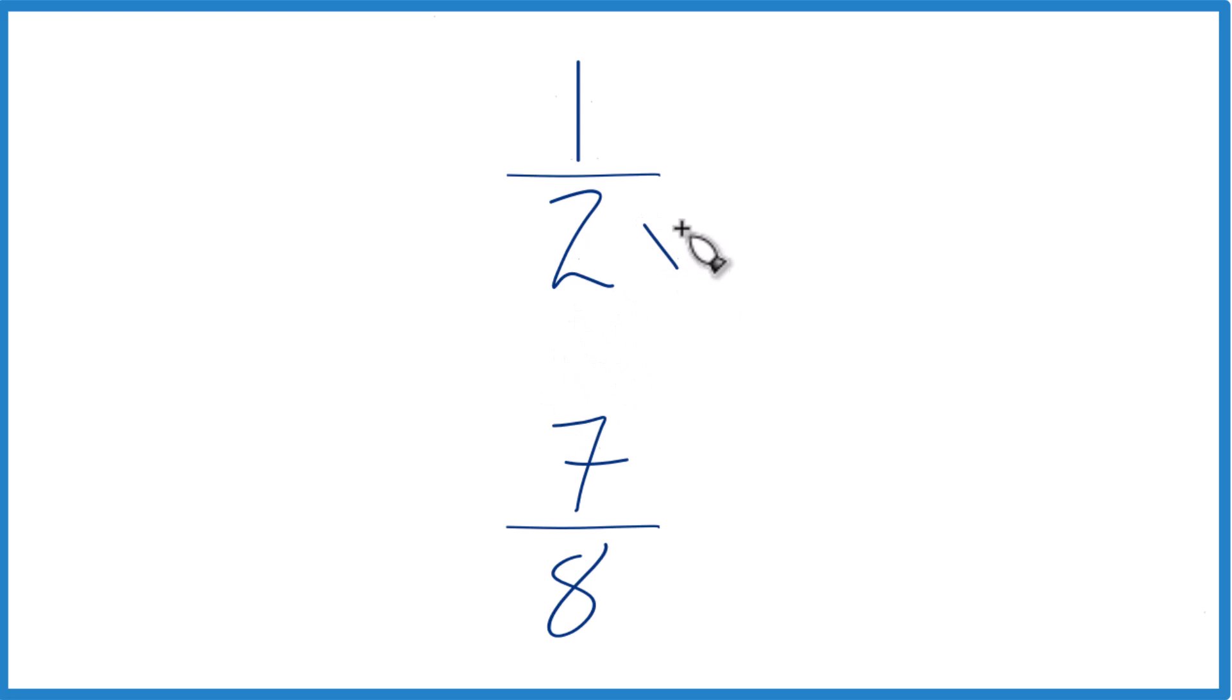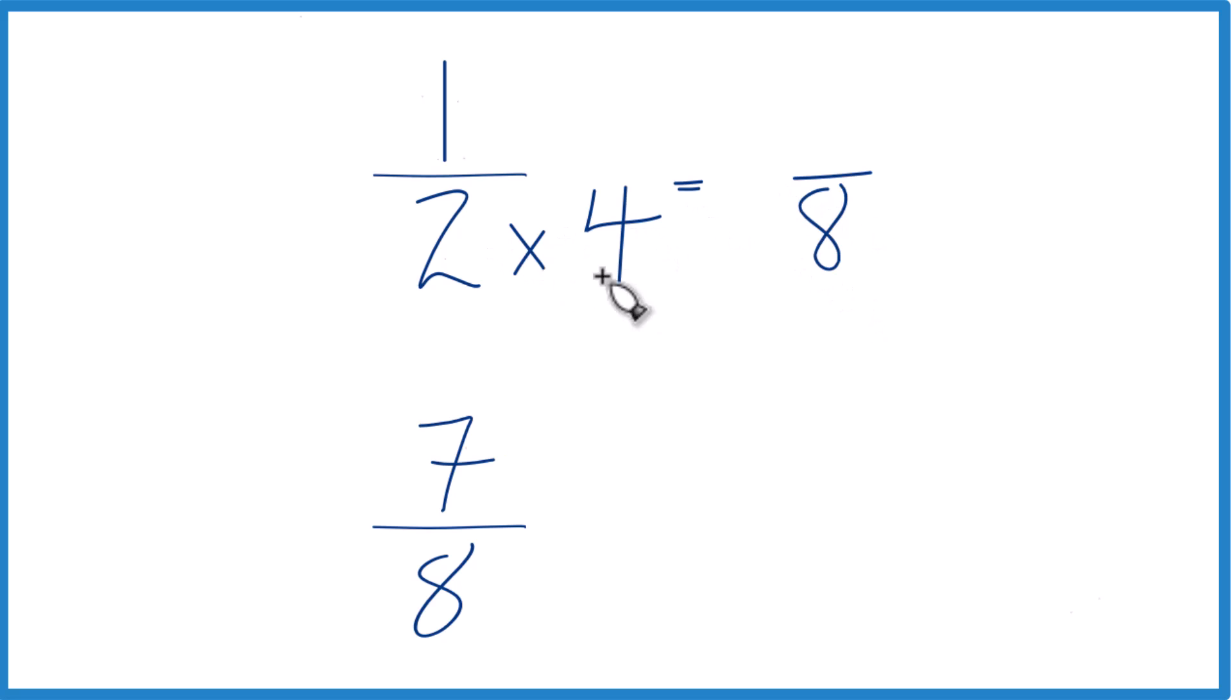So why don't we take two times four, because that would give us eight. And then down here we already have eight in our denominator, let's just keep that as seven-eighths.